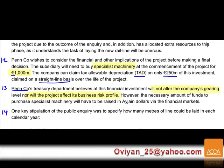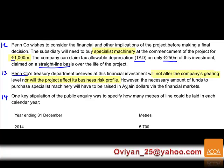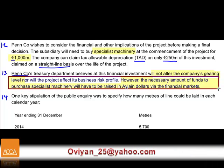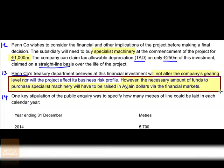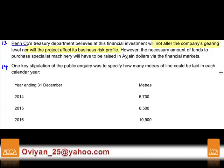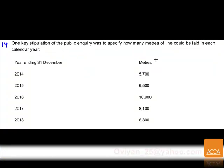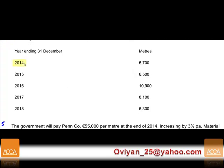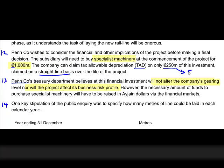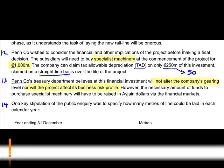However, the necessary funds to purchase the machinery will have to be raised in Agay dollars from the financial market, in the same proportion as the current financial structure. One key stipulation of the public inquiry was to specify how many meters of line could be laid each calendar year. This runs for five years, and TAD will be 50 per annum on a straight-line basis.